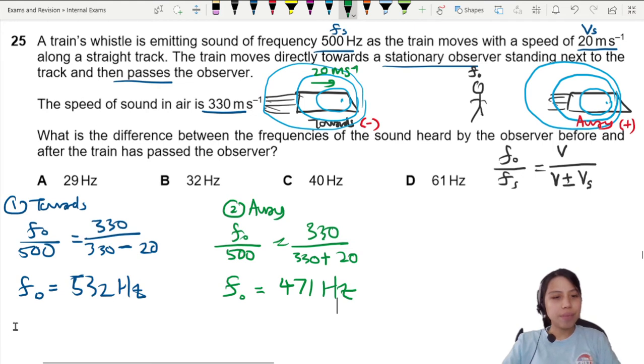You hear the difference? I mean, you see the difference? 532 when it's coming towards you, 471 when it's going away from you. I guess you could hear the difference.